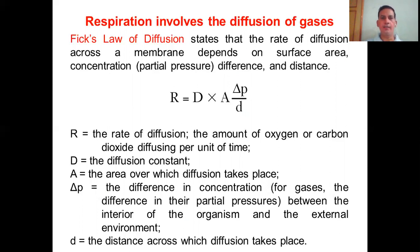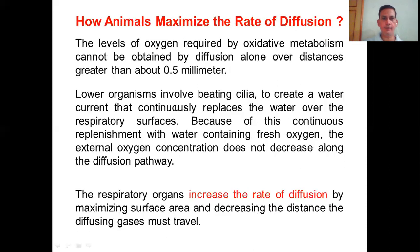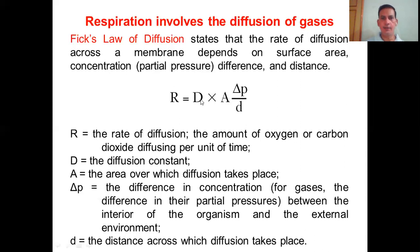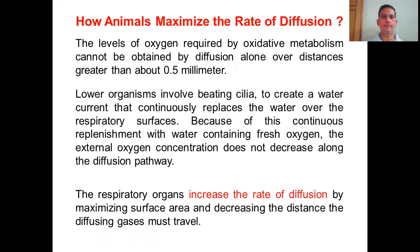In higher organisms such as humans, this distance is decreased by making a passage — from the nostril to the alveoli, the passages are designed so that air reaches the alveoli where exchange of gases takes place. So the rate of diffusion equals D (diffusion constant) times A (area of diffusion) times delta T (difference in partial pressure of gases) divided by D (distance across which diffusion takes place). Now, how do animals maximize the rate of diffusion?